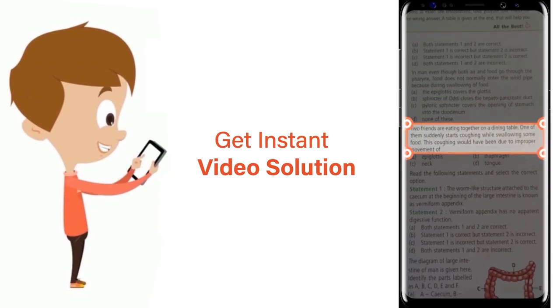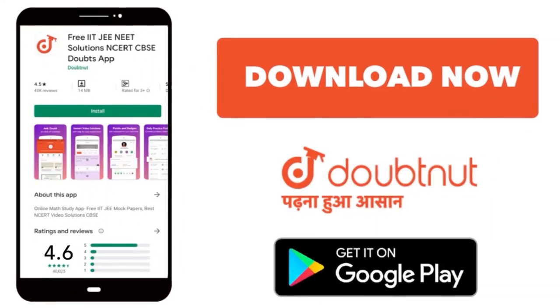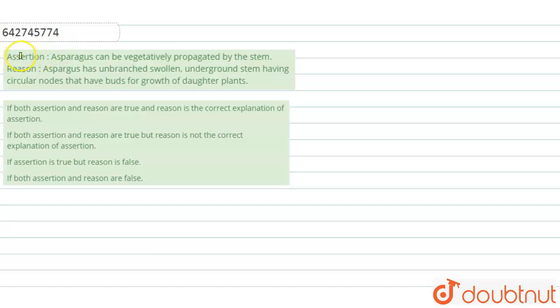Hello, the question is: assertion that is asparagus can be vegetatively propagated by the stem.